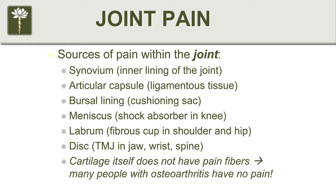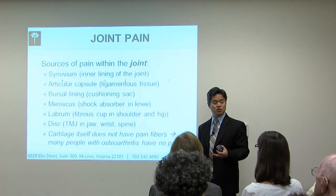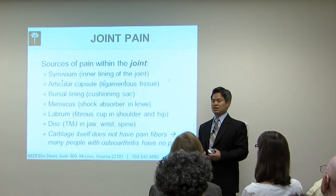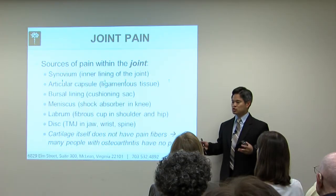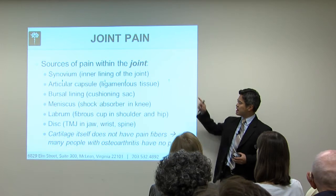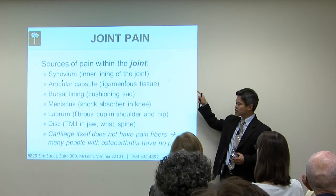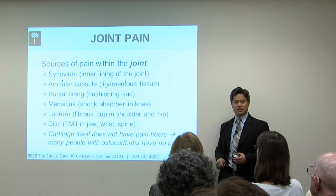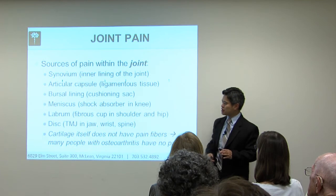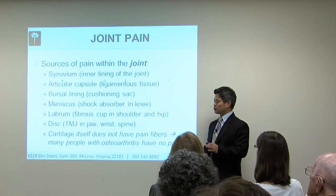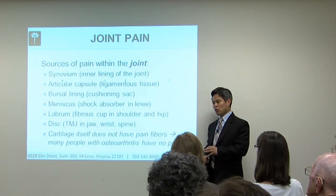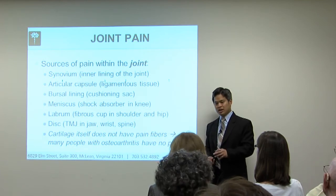You can also have issues with the cartilage. Osteoarthritis classically affects the cartilage. Osteoarthritis is a little bit of a misnomer because it sounds like it has something to do with bone. Doctors order x-rays and say, 'You see how the bone there is kind of messed up? You have arthritis in that joint.' But by definition, arthritis is not a disorder of the bone — it's actually a disorder of the cartilage.